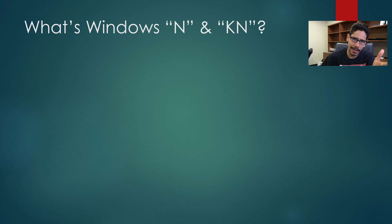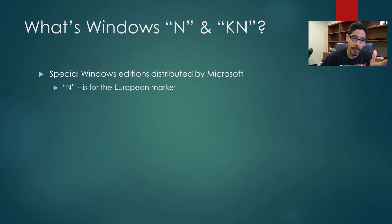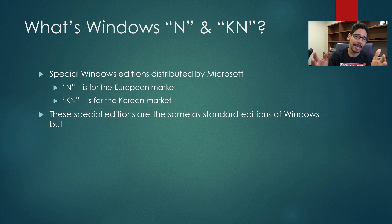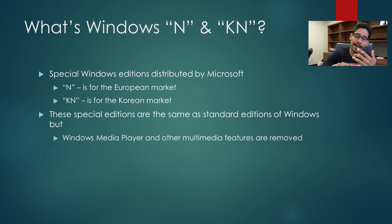So what are Windows N and KN? These are special Windows editions distributed by Microsoft. The N is for the European market and the KN is for the Korean market. The special editions are the same as standard editions of Windows, but Windows Media and other multimedia features are removed automatically.